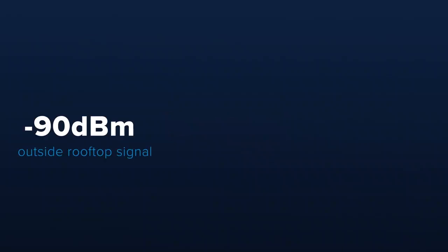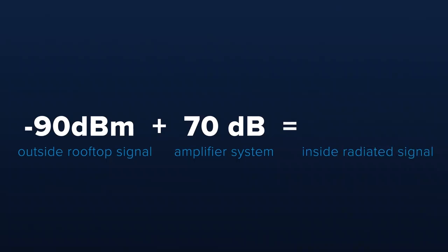DB, on the other hand, is a relative figure and is simply an abbreviation for the word decibel. We use DB to describe how much increase or decrease in signal strength we have in our system. For example, if we measure an outside rooftop signal of negative 90 DBM and our amplifier system has a total gain of 70 DB, then our inside radiated signal would be negative 20 DBM.